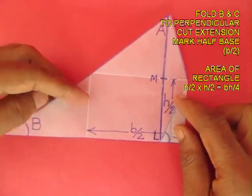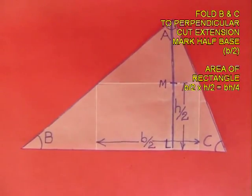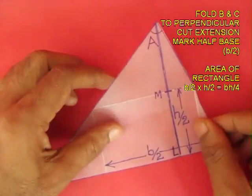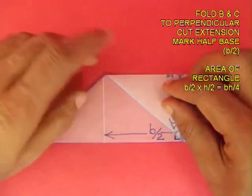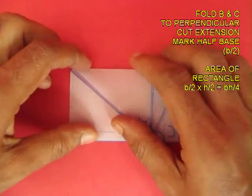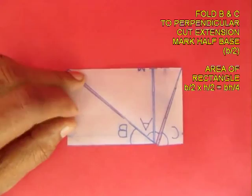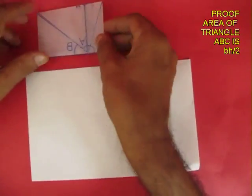Now fold the three angles C, B and A and they will meet at one point. You can see that the area of the rectangle is b by 2 into h by 2, or bh by 4.